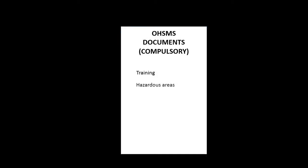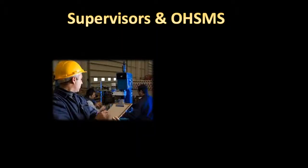There are a number of OHS management system records which organisations are required to keep by law. Among others, these include training, hazardous areas, radiation, high-risk work licences, and carcinogenic substances. Supervisors are largely responsible for the implementation of policies and procedures involved in the OHS management system.